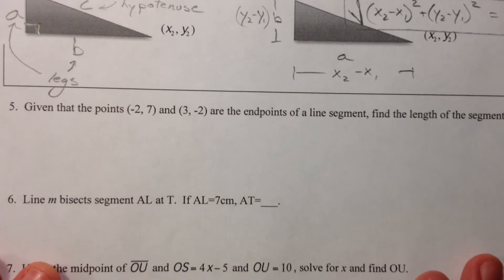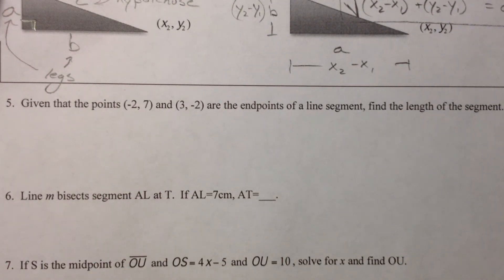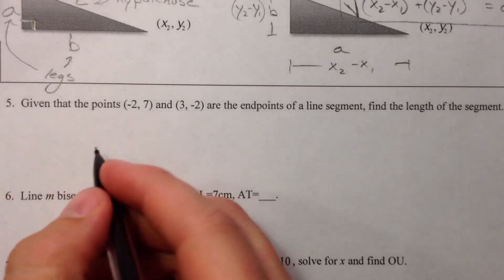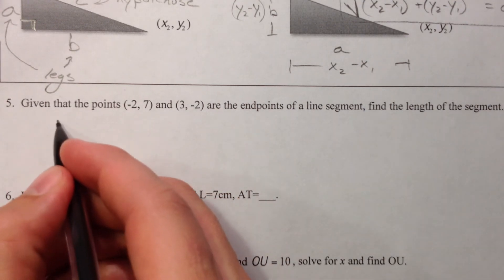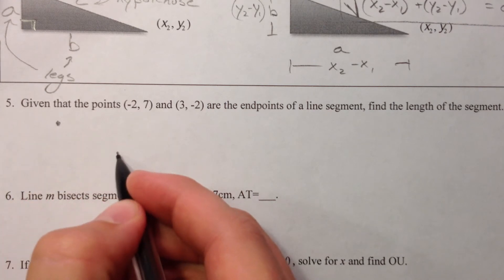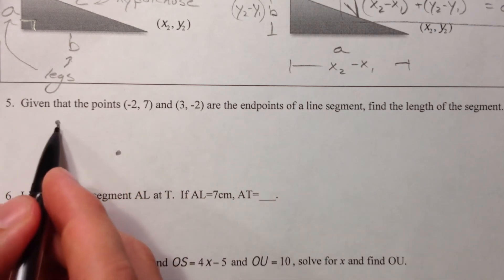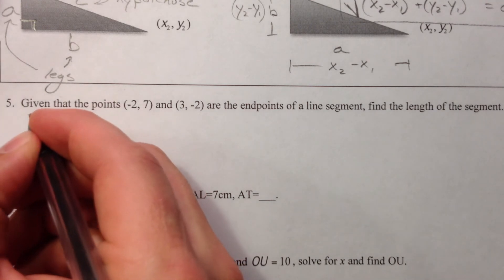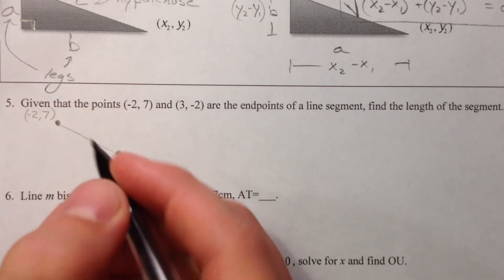So given that you have two points you guys try this one. Find the length of the segment. Find the distance. So you've got negative 2, 7 and 3, negative 2. Seriously folks, pause the video and try it yourself.